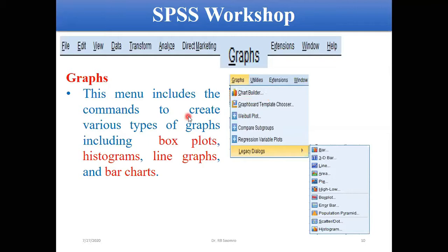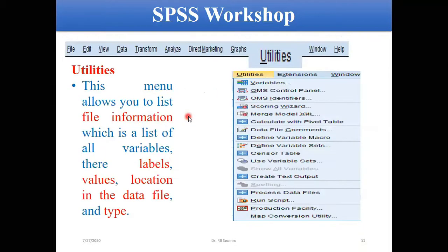There is also the Utilities menu. If you want to get file information about the files you are using, these options are available to you. You can also find label values, variable locations, and related information with the help of these options.